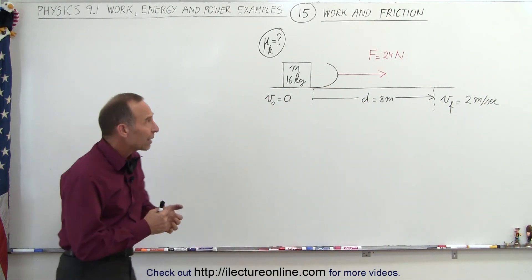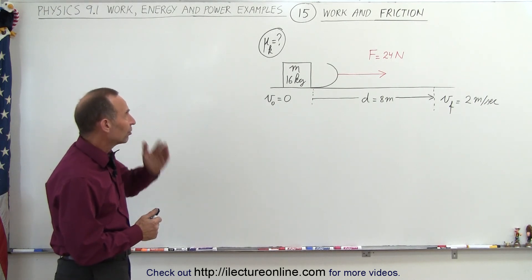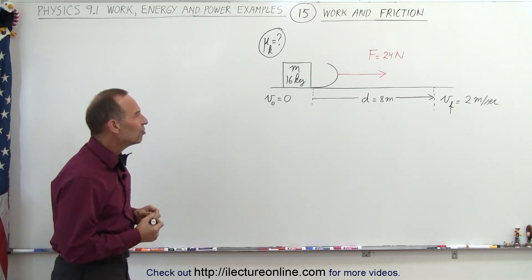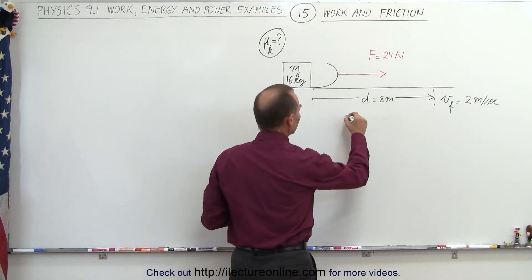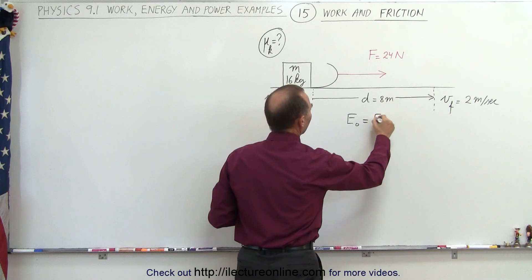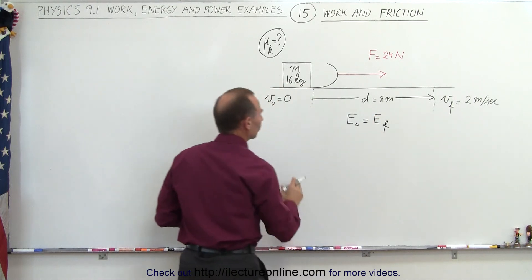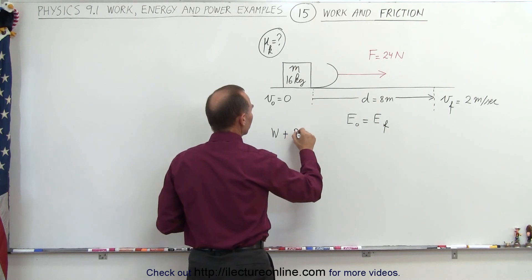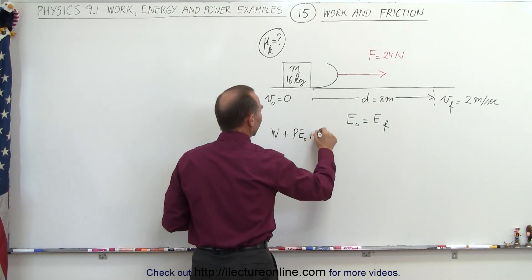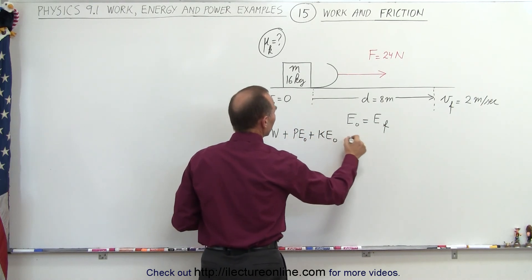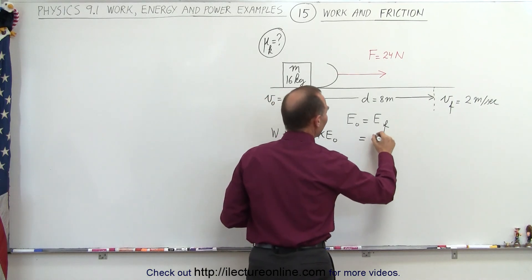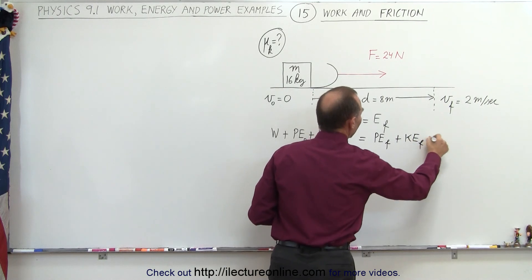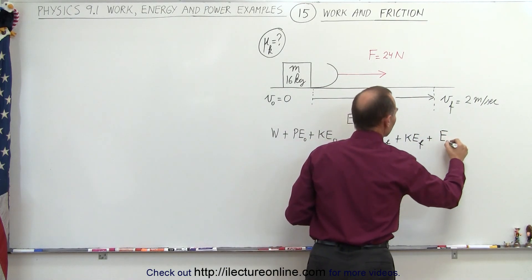From that information, can we figure out what the coefficient of kinetic friction is? The answer is yes. Let's use the energy equation. We can say that energy initial equals energy final, and so any work put into the system plus any initial potential energy plus any initial kinetic energy should equal any final potential energy plus any final kinetic energy plus any energy lost because of friction.